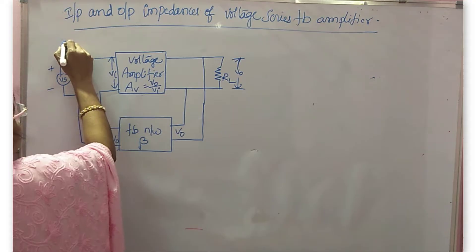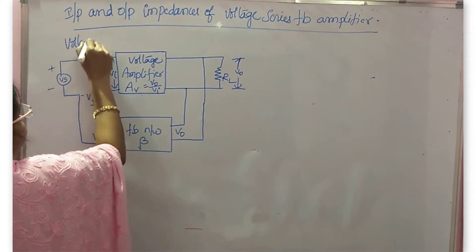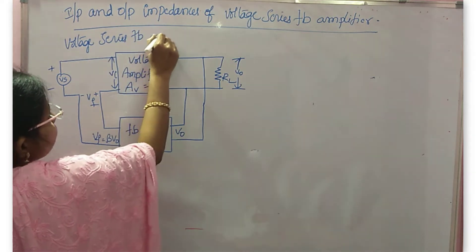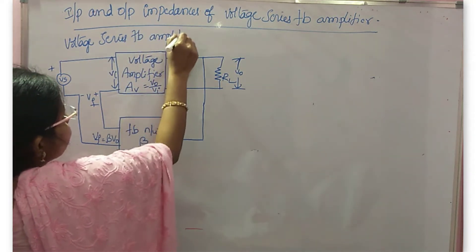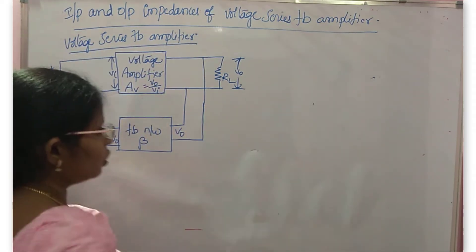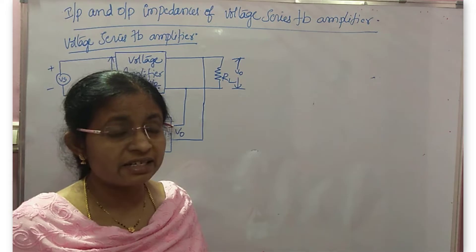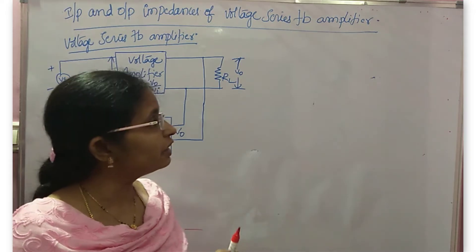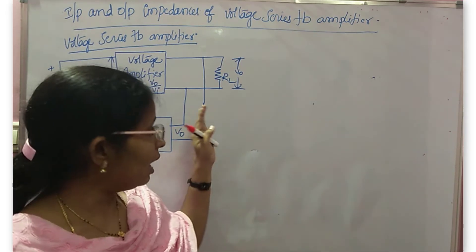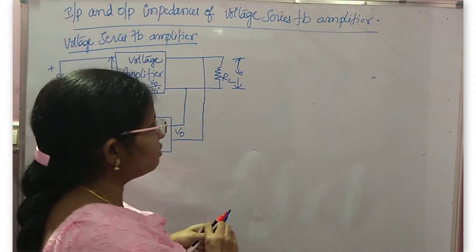This is the block diagram of the voltage series feedback amplifier. To find the input and output impedances of the voltage series feedback amplifier, you need to draw the Thevenin's equivalent circuit of the amplifier. So here I'll draw Thevenin's equivalent circuit.